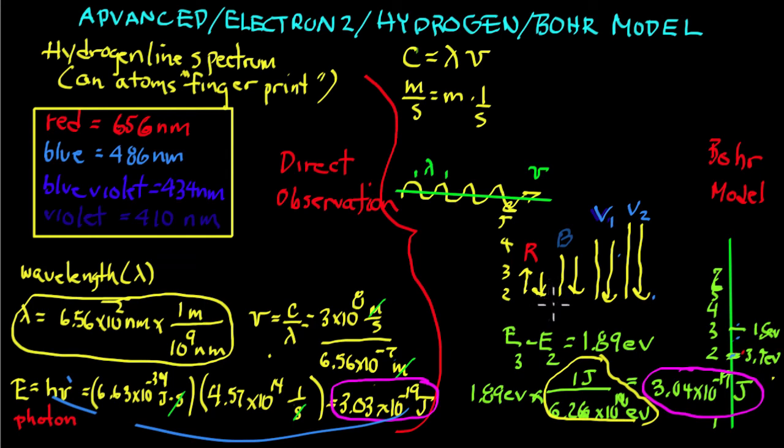Niels Bohr began with the atom, suggesting that the atom's levels are quantized. They're discrete levels, and electrons can only be at certain levels and cannot be at other levels. Okay, we're going to stop right now.